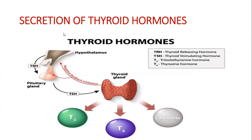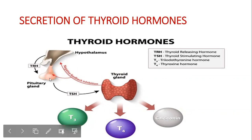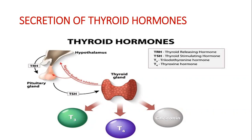Now coming to the secretion of thyroid hormone. Thyroid hormone secretion is under the control of thyroid stimulating hormone (TSH). The thyroid gland secretes T3, T4, and calcitonin under the control of TSH from the anterior pituitary, and TSH is in turn controlled by TRH — thyrotropin releasing hormone — from the hypothalamus.